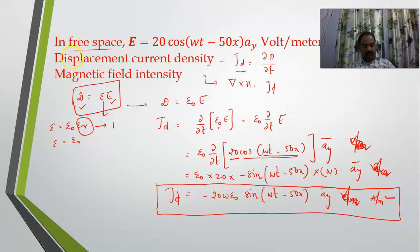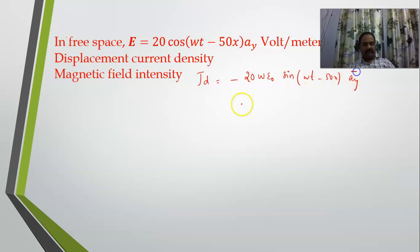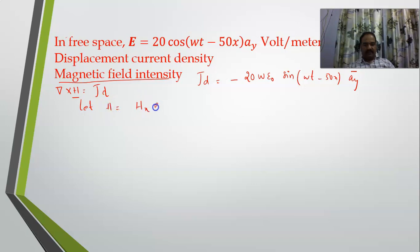Moving on to the next one: magnetic field intensity H. We have already obtained Jd as −20ωε₀ sin(ωt − 50x) aŷ. Now I need to determine H, and the relation between these two is ∇×H = Jd. I do not know the value of H yet, so for now I will take H as having components in all directions.